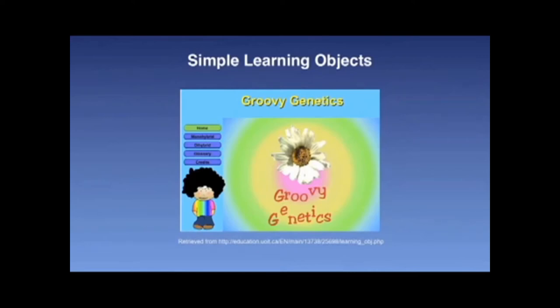Alternatively, Kay and Knack in 2007 defined learning objects with a focus on their impact on learning, describing them as interactive web-based tools that support the learning of specific concepts. Several of these types of learning objects, as designed by undergraduate BEd students at UOIT, can be found at a URL provided in the WebCT portion of this course. While these definitions can be interpreted from various perspectives, generally the objects provide simple activities that allow for very little interactivity — at least beyond clicking a button that performs a specific action — and are concentrated on a single set of concepts.